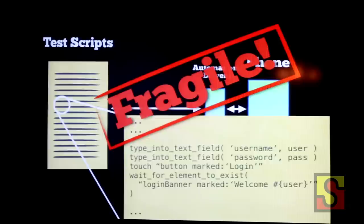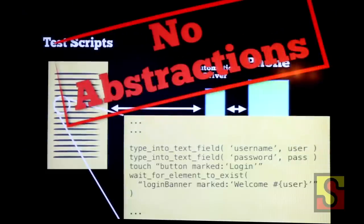It's super fragile. When I change my UI, bits of this test are going to break. I've probably cut and paste this code — cut and paste reuse. The test scripts that you write if you're talking directly from test script to automation tool are fragile, and the core problem here is there are no abstractions. You're trying to talk directly from your high level test script to the automation driver.